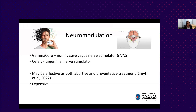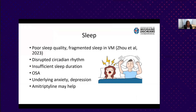Neuromodulation shows promise in some smaller studies as both abortive and preventative treatment, though it can be expensive. Sleep is a really important thing to focus on. Poor sleep can contribute to migraines, and a study in vestibular migraine patients found poor sleep quality, fragmented sleep, and disrupted circadian rhythm. I will often check patients for sleep apnea. Anxiety and depression can contribute to poor sleep, so amitriptyline might be a good choice—but be careful not to use sedating medications in patients with untreated sleep apnea.